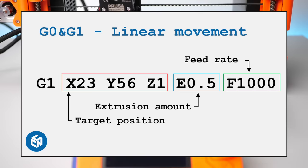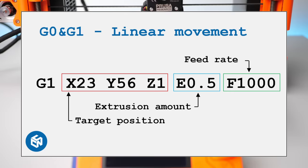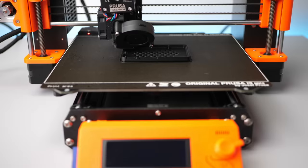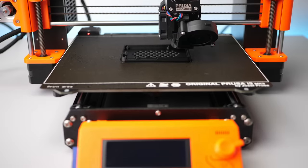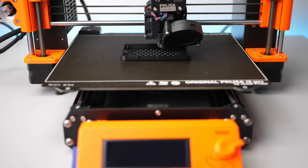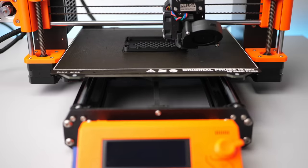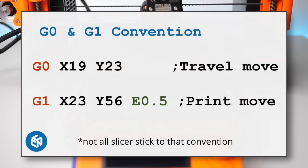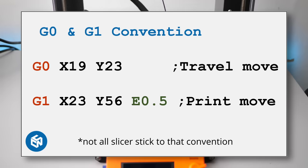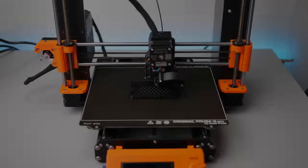G0 and G1 don't require values for all axes, and the feed rate only needs to be set once and will persist until it gets changed. G0 was used in the past for rapid moves where precision wasn't needed. G1, on the other hand, was a coordinated linear move from one to another position. On today's 3D printers, G0 and G1 do practically the same, with the convention that G0 is used for travel movements and G1 for movements where material gets extruded.